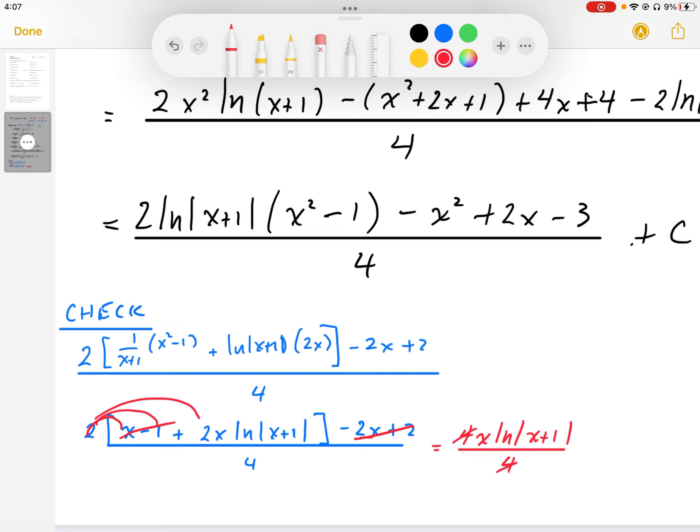The 4s cancel out, and we end up back where we started, x log of x plus 1. So that gives us our original derivative, so this must be the correct integral.